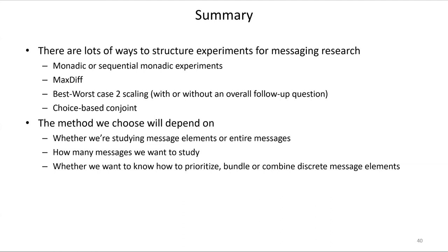First question: how is reach defined with max diff scores when doing TURF? There are several ways. The simplest: if an item is someone's favorite, that item reached them. Or you can create a threshold utility — anything with a utility of one or greater counts as reaching a respondent. Or the top three messages for a person all count as reach. There's also a more technical definition in our software, though it's too technical to describe without documentation in front of me.